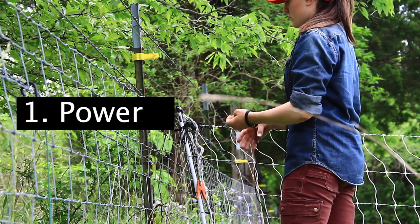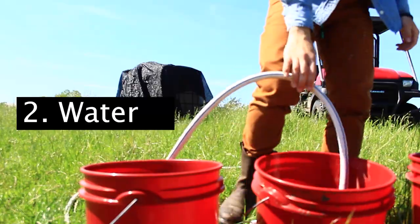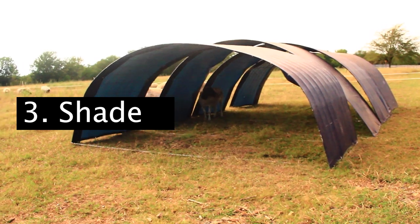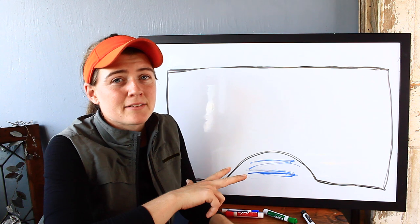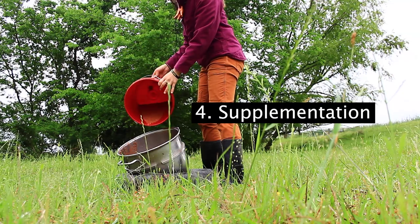I need to run a rotational grazing program, which is power, obviously, for the electric fencing on my paddocks, water, which is essential for running livestock, shade structure, because this particular pasture is very sparse and I live in Texas.